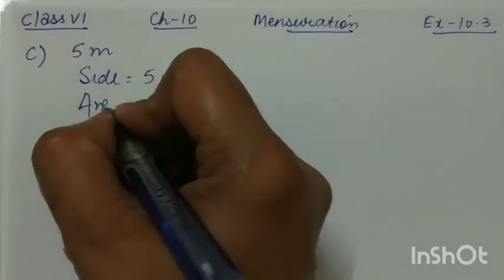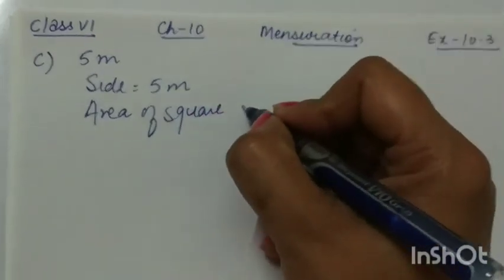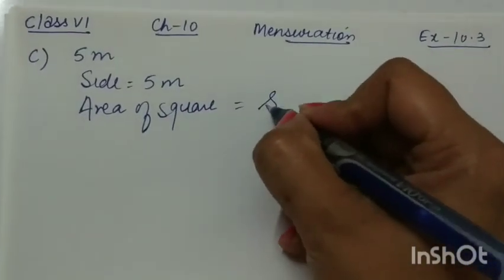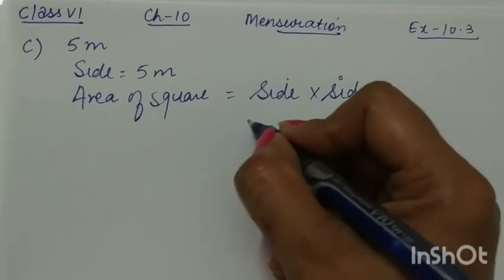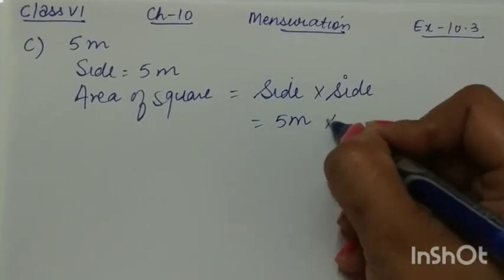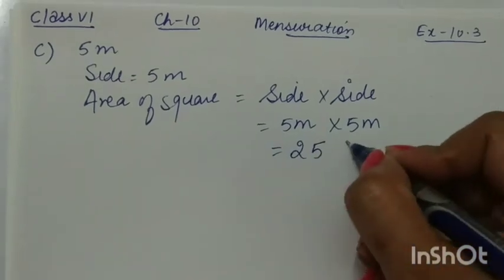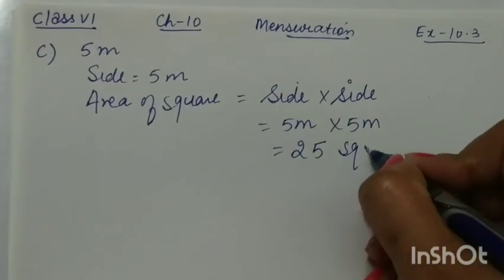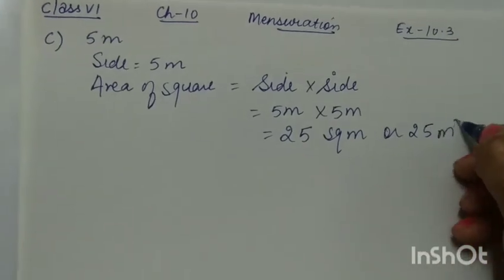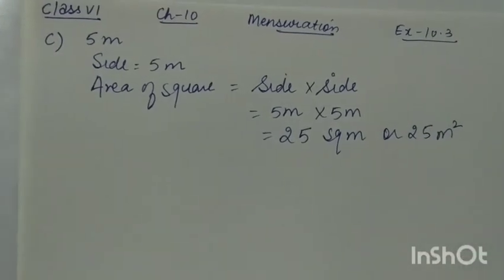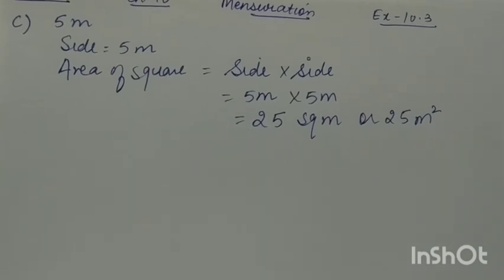Part c: the side is 5 meters. We have to find the area of the square, and area of a square is side multiplied by side, so this will be 5 meters multiplied by 5 meters, which equals 25 square meters — or you can write 25 meter square. So this is question number 2 of Exercise 10.3.